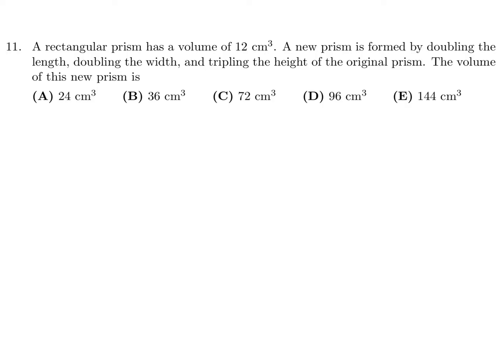A rectangular prism has a volume of 12. A new prism is formed by doubling the length, doubling the width, and tripling the height. The volume of the new prism is — so length times width times height is the original volume calculation.